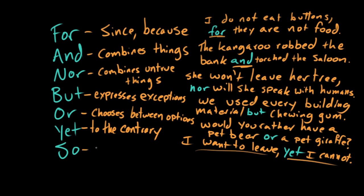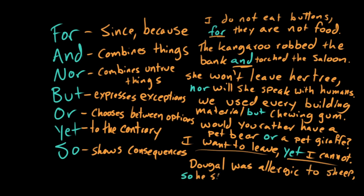And finally, the last part of fanboys. So shows consequences. Dougal was allergic to sheep, so he skipped the wool festival. So we're trying to set up that as a consequence of the first clause, Dougal being allergic to sheep, the thing that follows is because of that. He decided to skip the wool festival.